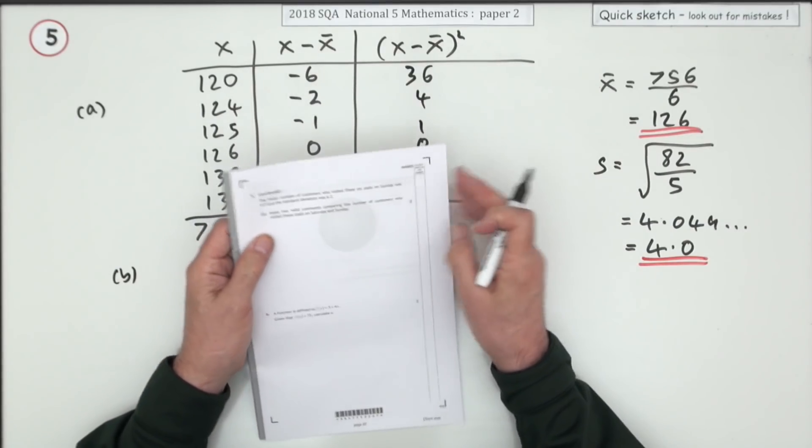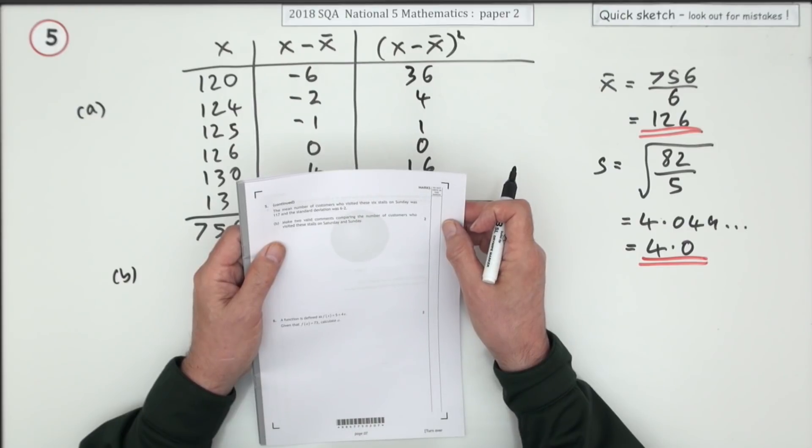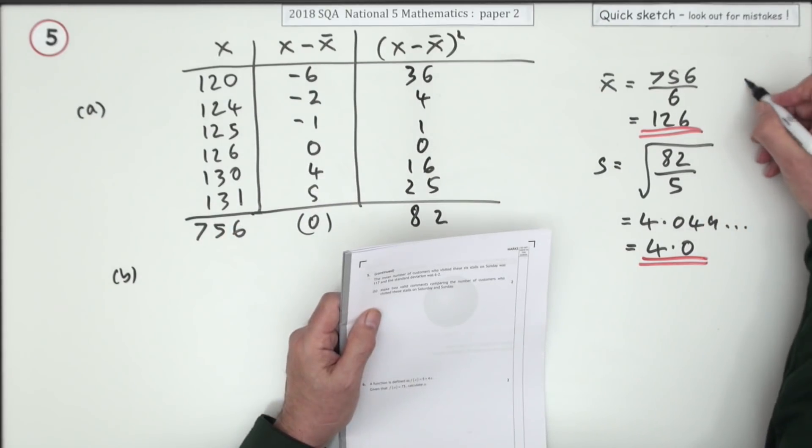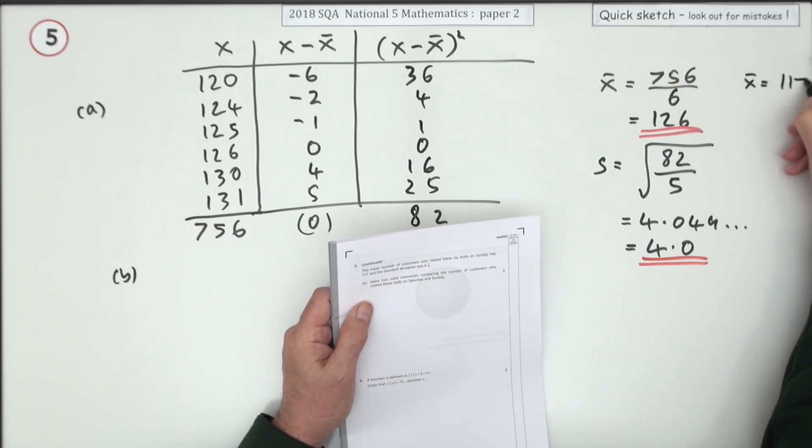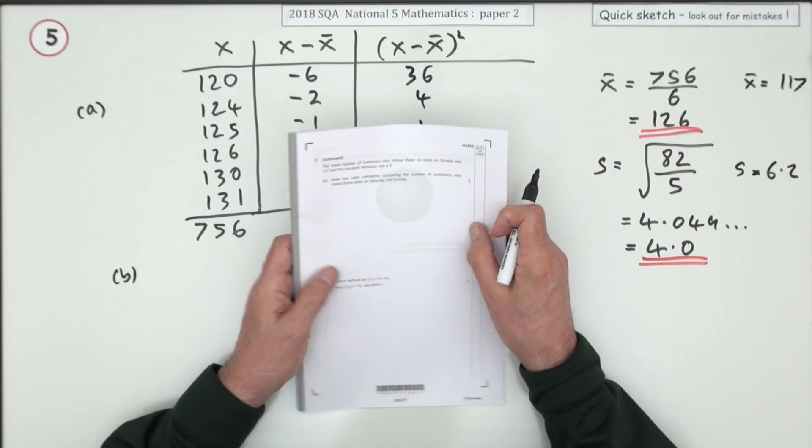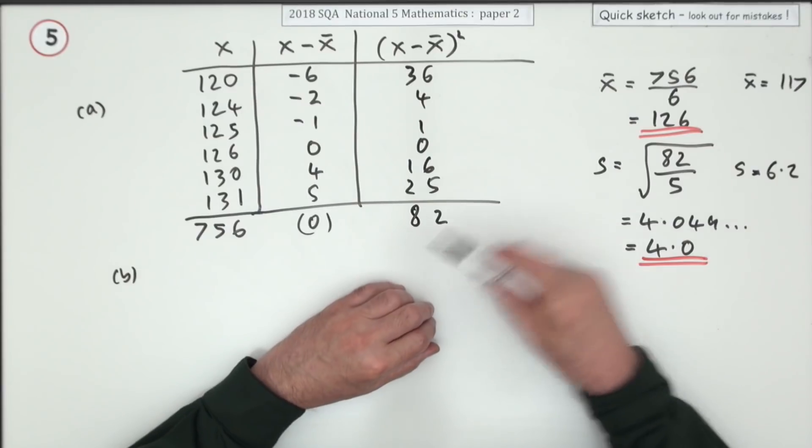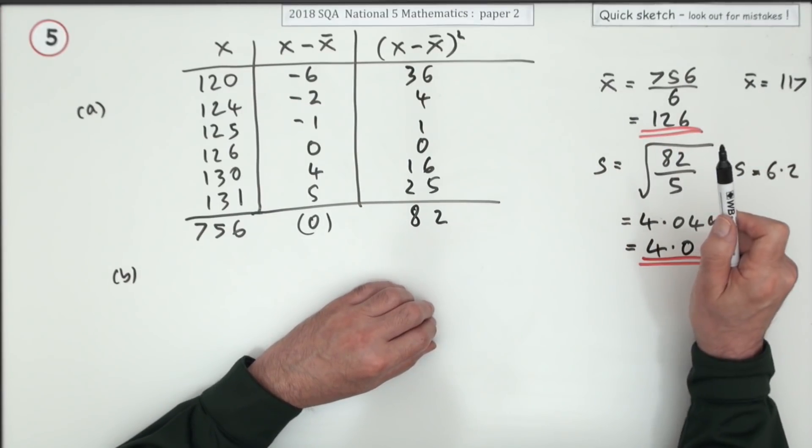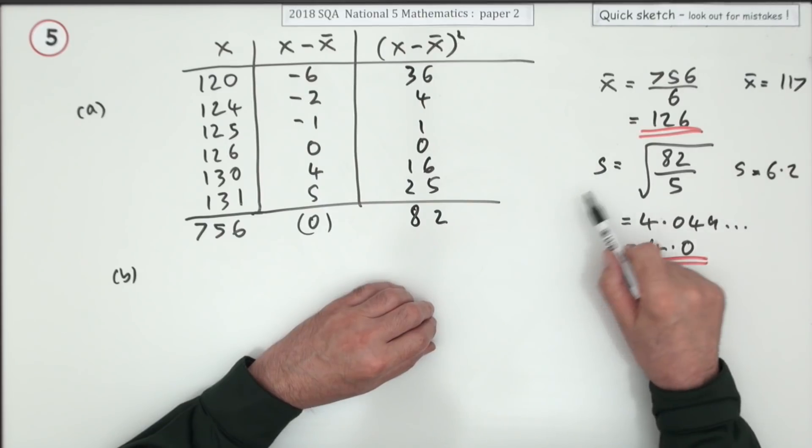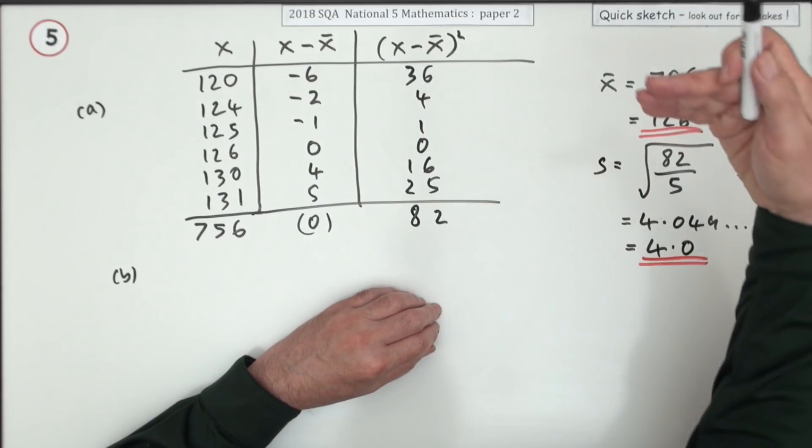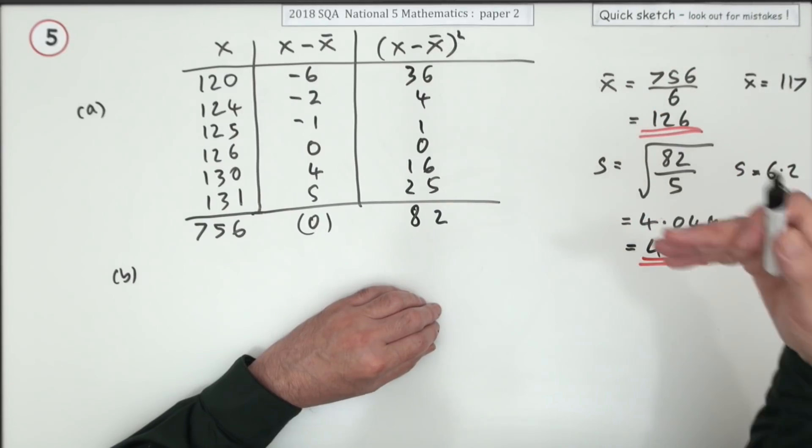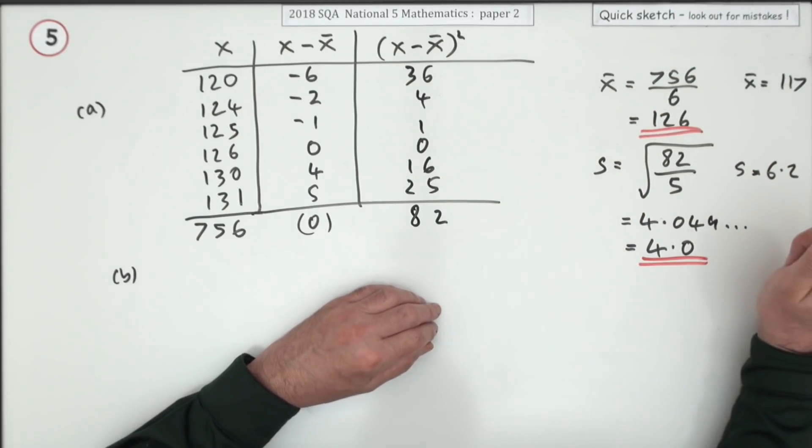Now part B gives you the mean and the standard deviation on the Sunday. I'll just put them over here. On the Sunday it was 117, and on the Sunday it was 6.2. Now you've got to make two valid comments comparing them. So the comments are: one, something about what the mean stands for, and something about what the standard deviation stands for. That means you have to mention mean and average, and standard deviation and spread, or possibly consistency, and also justifying it numerically.